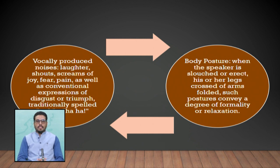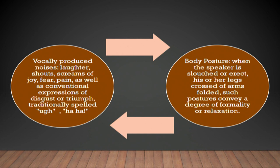Vocally produced noises — laughter, shouts, screams, expressions of joy, fear, pain, disgust, or triumph — are also part of non-verbal communication. If you are watching a cricket match and your cricketer hits the ball out of the park, you yell 'wow' or 'yes' or 'aha' — that is a non-verbal way of communicating excitement. Body posture is also very important — how you are sitting, how you are standing, whether you are erect or slouched. Such postures convey a degree of formality or relaxation.